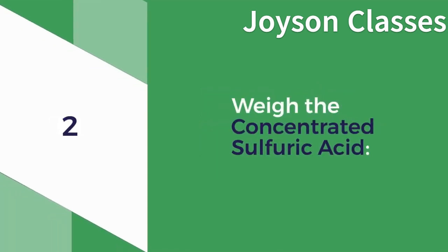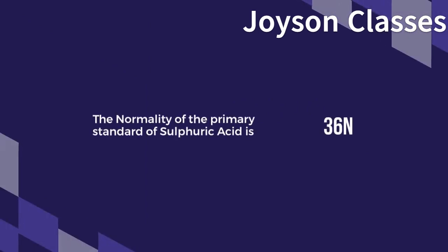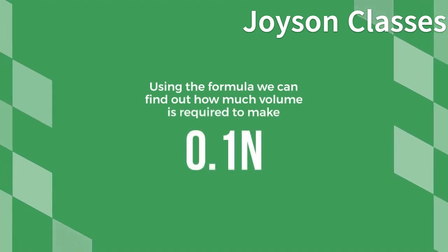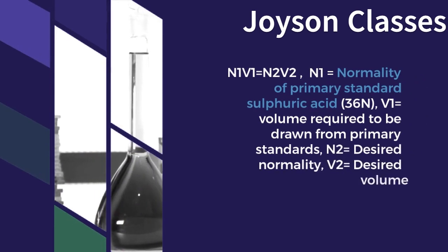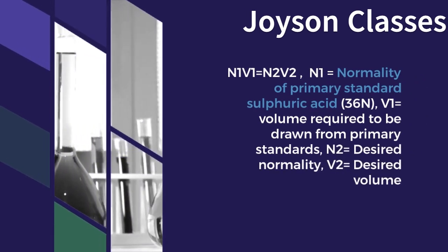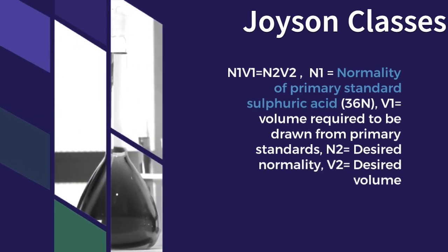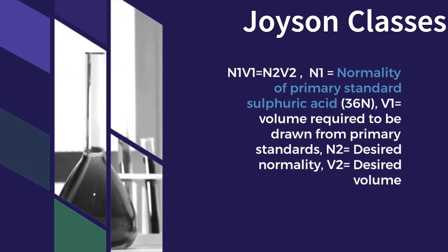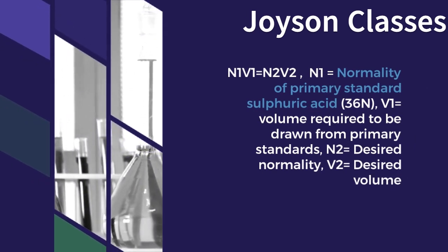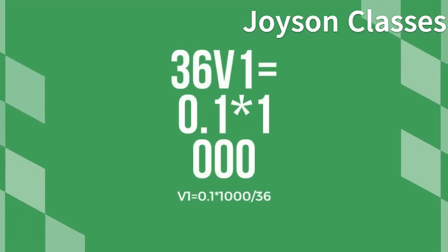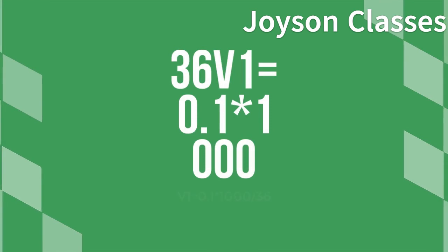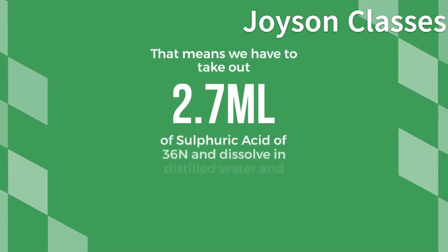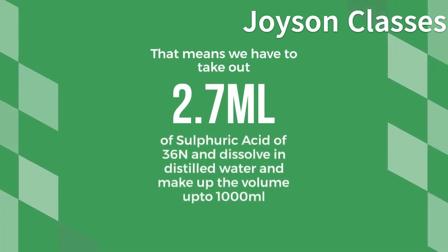2. The Concentrated Sulfuric Acid. The normality of the primary standard of sulfuric acid is 36N. Using the formula N1V1 = N2V2, we can find out how much volume is required to make 0.1N. N1 equals normality of primary standard sulfuric acid (36N), V1 equals volume required to be drawn from primary standard, N2 equals desired normality, V2 equals desired volume. So: 36 × V1 = 0.1 × 1000, V1 = 0.1 × 1000 / 36 = 2.7 ml. That means we have to take out 2.7 ml of 36N sulfuric acid and dissolve in distilled water and make up the volume to 1000 ml.